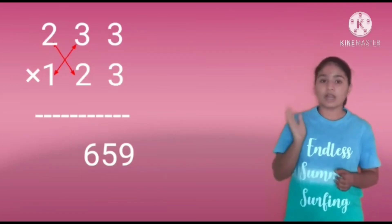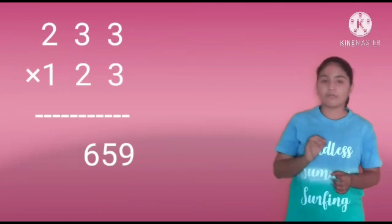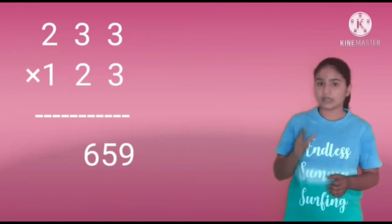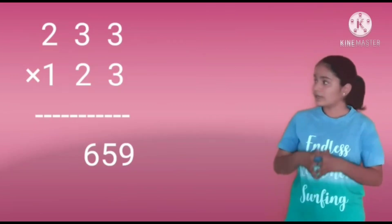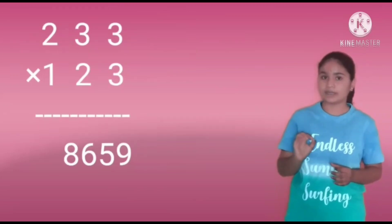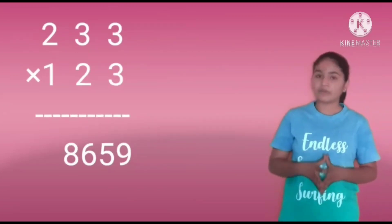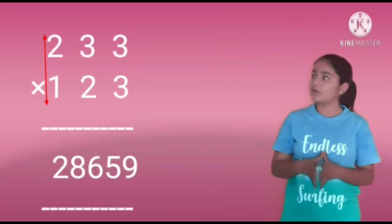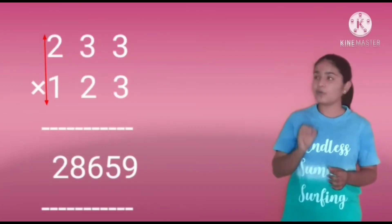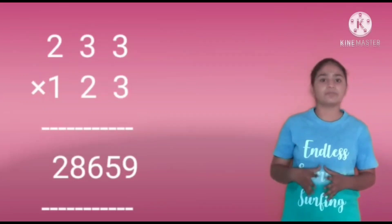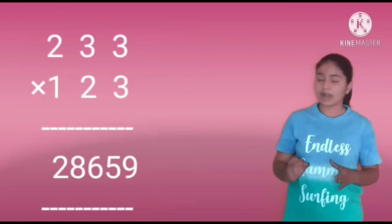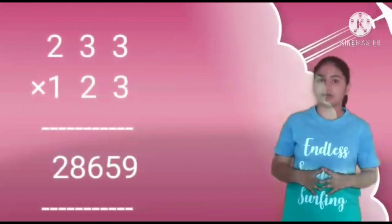Next, we have to do the last digit multiplication. That is 2 into 2 and 1 into 3. It will be 4 and 3. Add these numbers, we will get 7. Add the carry to it, the answer will be 8. Write the 8 before the number 659. Next, we have to do the final last digit multiplication. That is 2 into 1 equals 2. Write the 2 as the last digit. So, our answer will be 28,659.